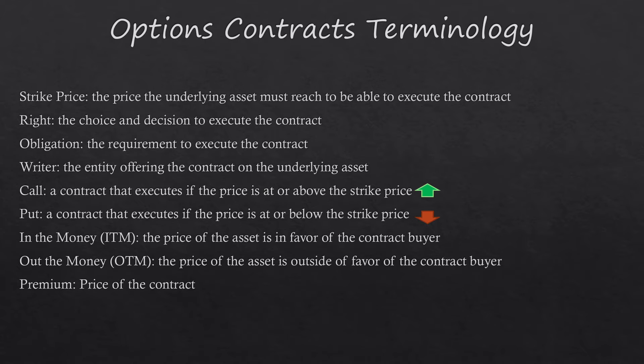The right is the choice and decision to execute the contract — sometimes you're given a right and sometimes you have an obligation. An obligation is a requirement to execute the contract, so you either can choose to or you have an obligation to. You need to know whether or not you have a choice in the matter.